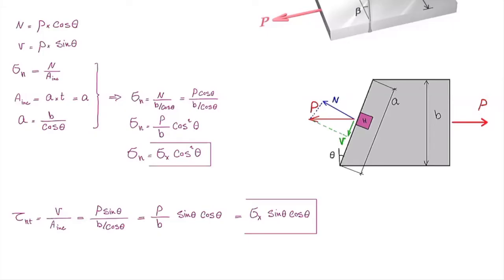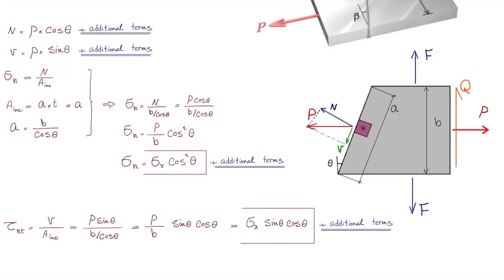These two equations are valid for the simplest case where there is just one stress sigma_x in the horizontal direction. But if we also have stress in the vertical direction and shear stress on the original plane, the problem is more complex. The magnitude of those stresses can be determined using the same concept of free body diagram and projecting forces in different directions. I'll give you the final equations to use for stress transformation without re-deriving them in full detail.